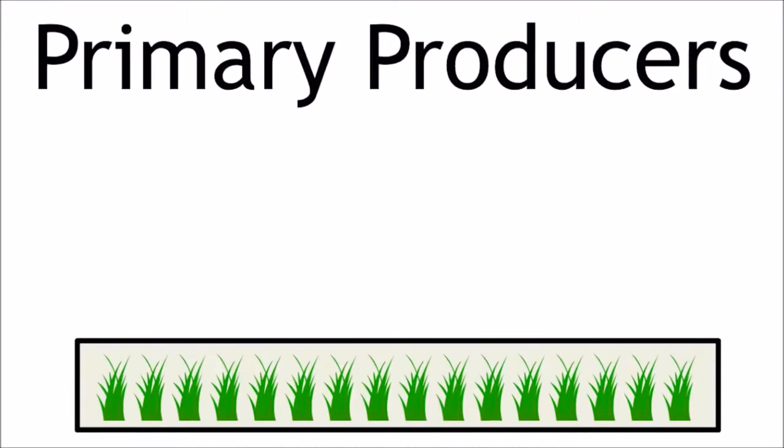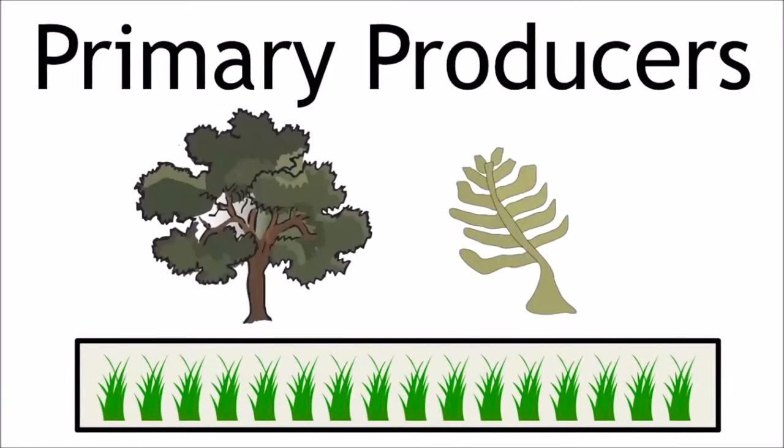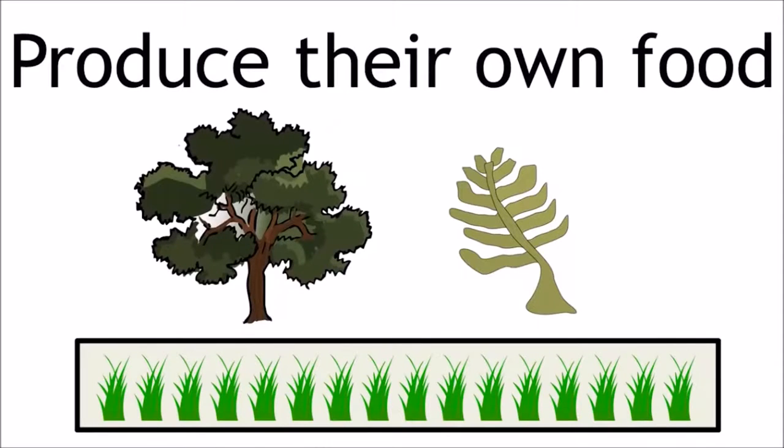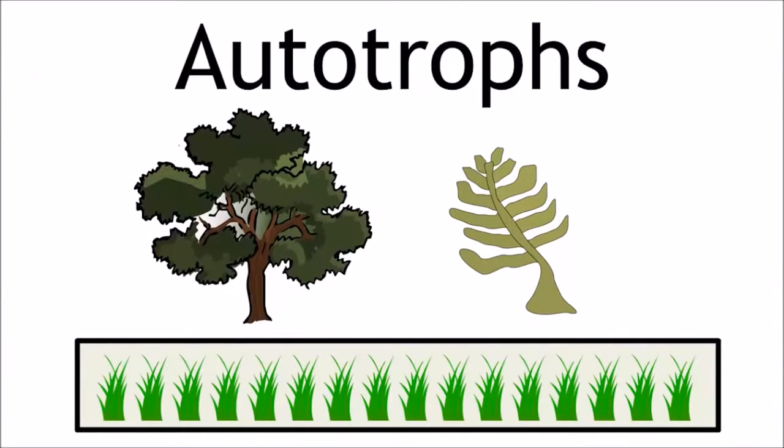So the first trophic level is the primary producers, the organisms which produce their own food, usually the green plants or algae. These organisms are also referred to as autotrophs.